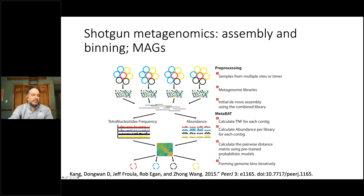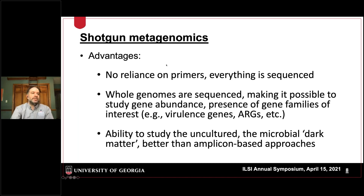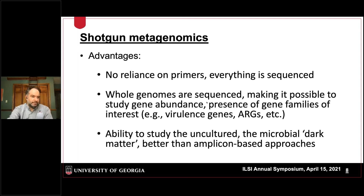What we get from this workflow are MAGs — metagenome-assembled genomes. The advantages of shotgun metagenomics are that we don't rely on primers, so everything is sequenced and we don't have to worry about missing diversity. All genomes are sequenced, making it possible to study gene abundance and the presence of gene families of interest — for example, predicting virulence genes or antimicrobial resistance genes in a microbial population. It's also better at studying uncultured organisms, the microbial dark matter.